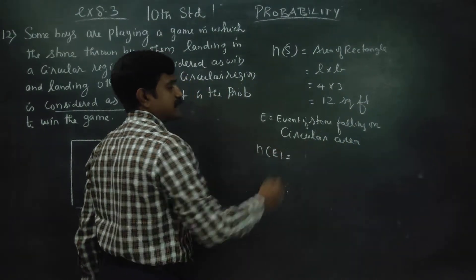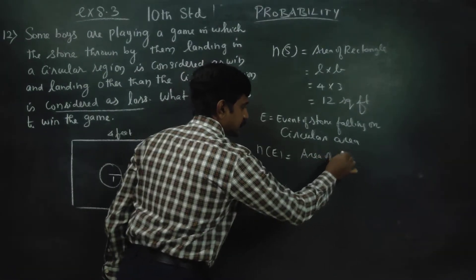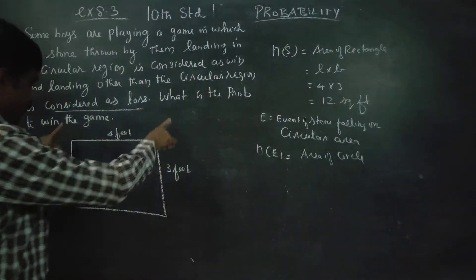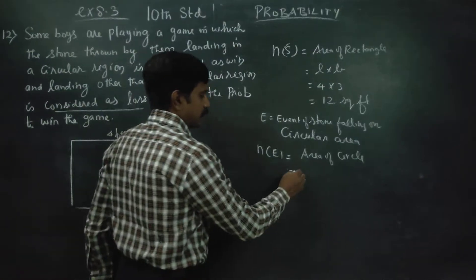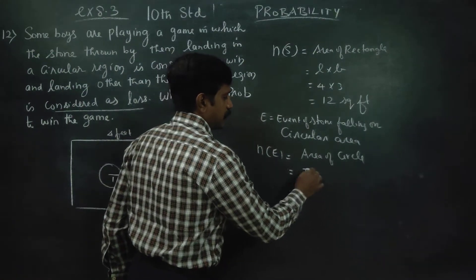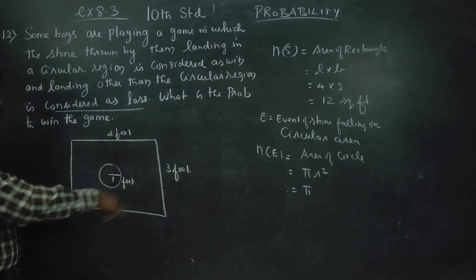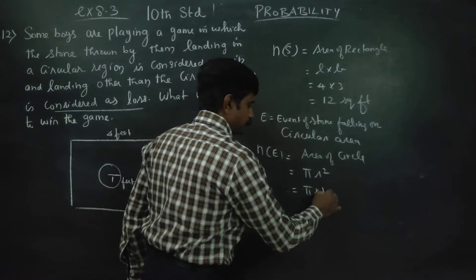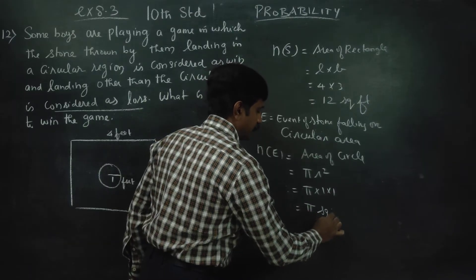Area of circle. The rectangle is the full ground. The formula for area of the circle is pi r squared. The radius is 1 foot from the diagram of the question, so 1 into 1 gives pi square feet as n of E.